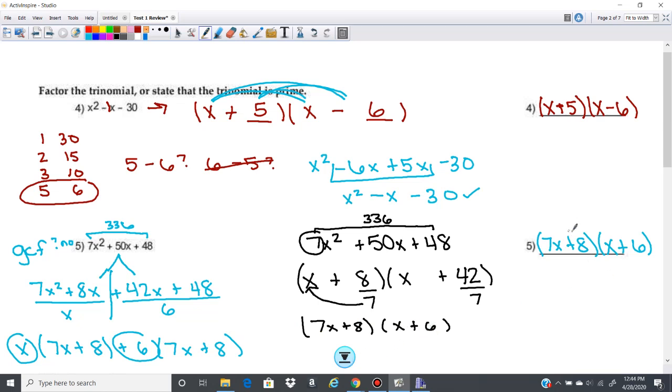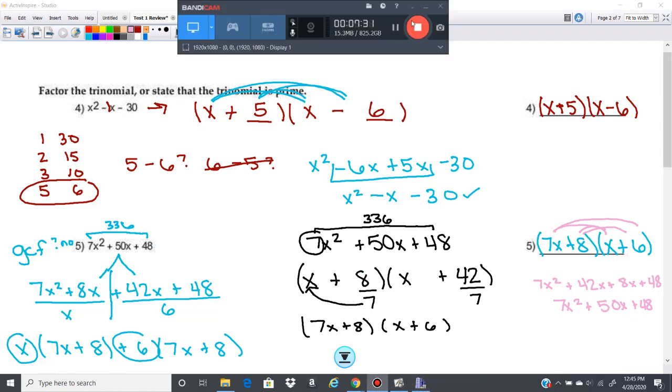So let's just go ahead and check this to make sure it works. 7x times x is 7x squared. 7x times 6 gives us a 42x. 8 times x gives us an 8x. And then 8 times 6 is 48. You get 7x squared. 42x plus 8x is 50x plus 48. So you've just worked this backwards and forwards and back again to the original problem. You have the correct factors. Thank you very much.